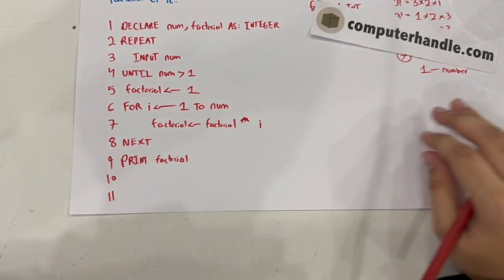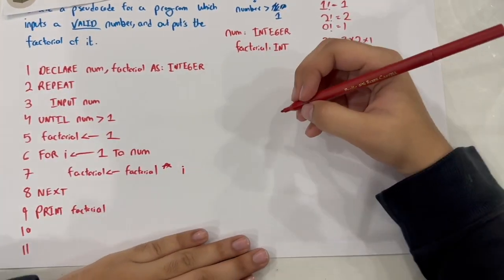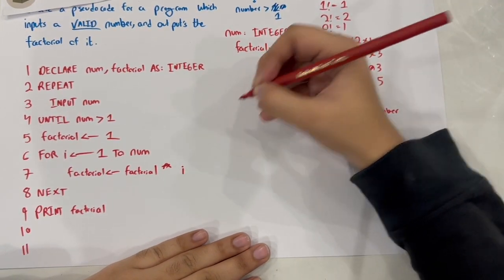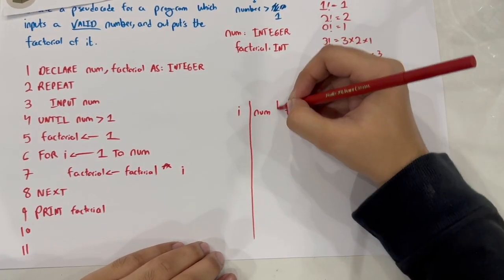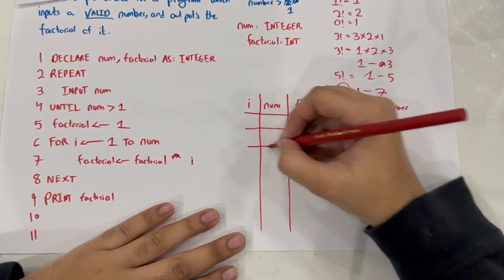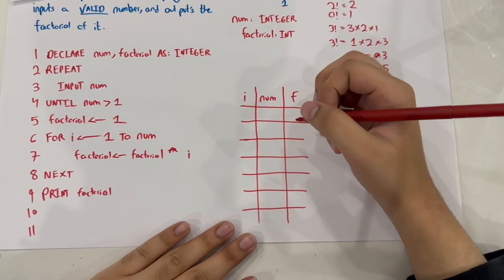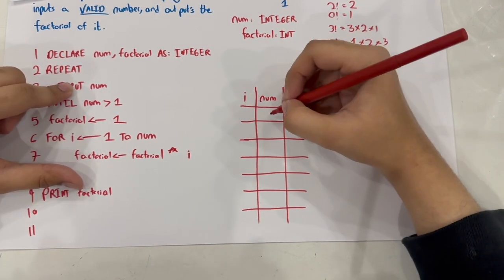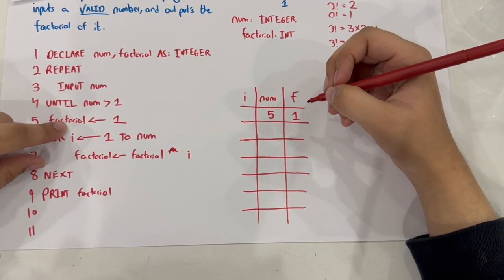Let's verify by creating a trace table. We have columns: i, num, and factorial. Let's say the input number is 5. Declare num and factorial. Repeat input num until num is greater than 1 — we enter 5. Factorial is assigned the value 1. Then i is assigned values from 1 to num, so the loop will run 5 times.